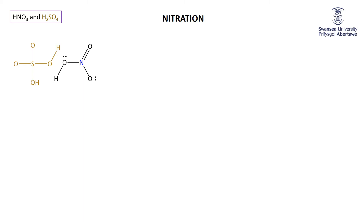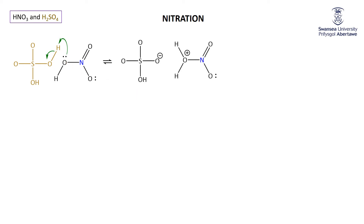Sulfuric acid is actually stronger than nitric acid, so when you have sulfuric acid and nitric acid together, the nitric acid acts as a base. It donates a couple of electrons to the hydrogen, and then this H+ leaves the sulfuric acid onto the nitric acid, which is acting as a base. You get this equilibrium: the hydrogen sulfate anion — the conjugate base of sulfuric acid — and this protonated nitric acid, the conjugate acid of nitric acid.